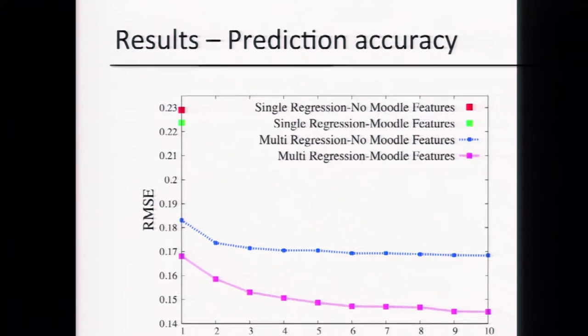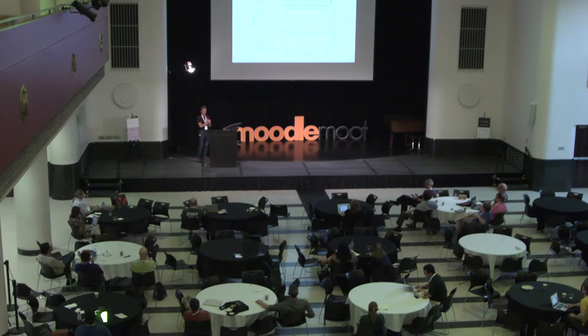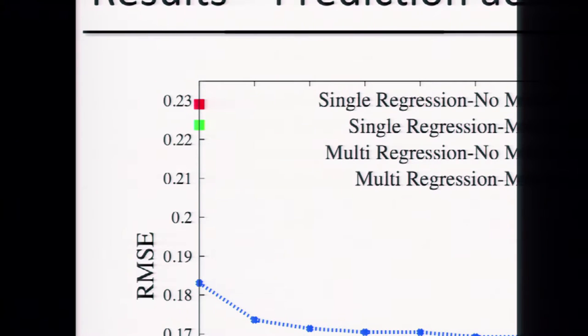We compare two types of features: one set containing nothing from Moodle — just the student's GPA, current performance in the course, type of class, type of assignment, and level — and another set that adds the Moodle features. The two squares at the top correspond to the single regression model. The red is without Moodle features, the green is with Moodle features. You can see that adding Moodle features gives some improvement. The RMSE is close to 0.2, meaning we're about 20% off from the actual prediction.